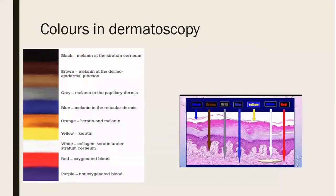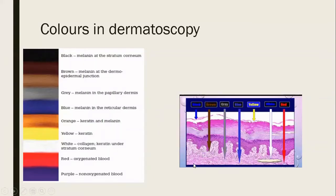The colors in dermatoscopy. I'm assuming we've all seen a histological picture of the skin. Here we can see the same — you have the epidermis and you have the dermis. In the epidermis, you can see the layers: that is the stratum corneum, the granulosa layer, the spinous layer, and the basal layer with the rete ridges. And then we have the papillary dermis and deeper we have the reticular dermis.